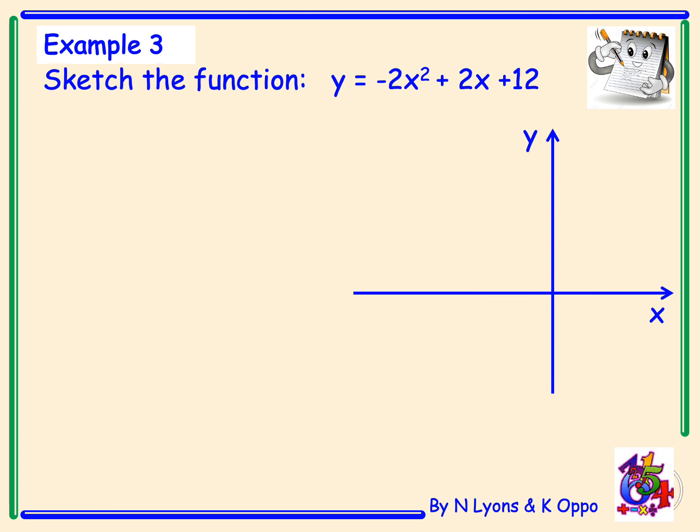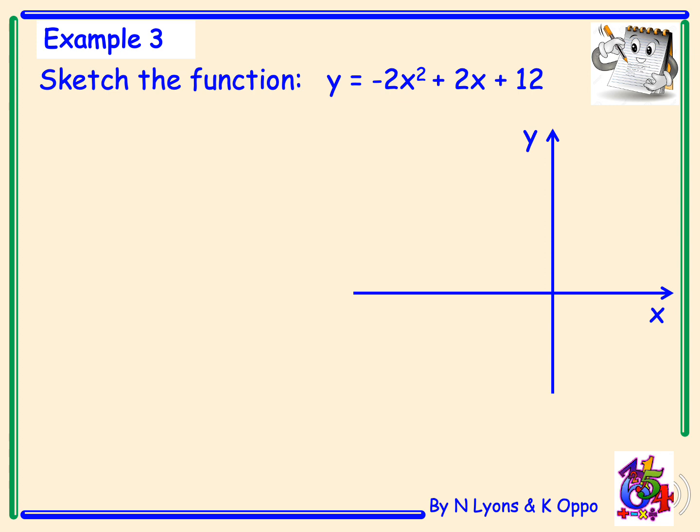Example 3. Sketch the function y = -2x² + 2x + 12. So we'll start with finding our y-intercept, and we can clearly see that the number at the end of our function is 12. So our y-intercept will be (0,12). From there we're going to look at our x-intercepts, or our roots, and to do that, y would be 0. So we make -2x² + 2x + 12 = 0.